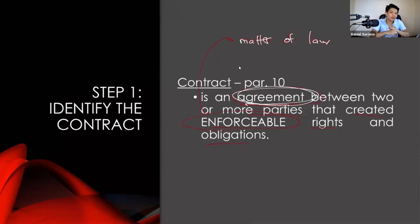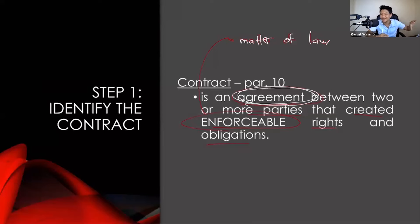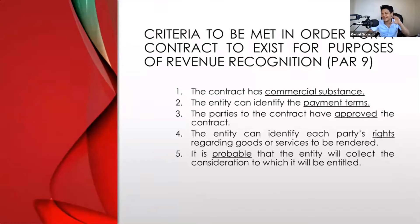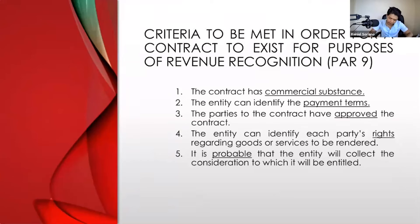The criteria to be met for a contract to exist for purposes of revenue recognition — in accordance with IFRS number 15, paragraph number 9 — are as follows. First, the contract has a commercial substance. Commercial substance means that after the exchange, the expected cash flows significantly change, similar to how it is discussed in IAS number 16 on property, plant, and equipment.